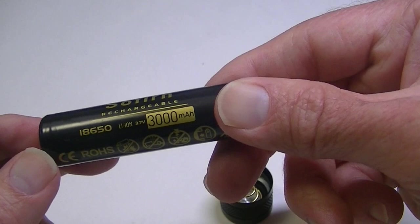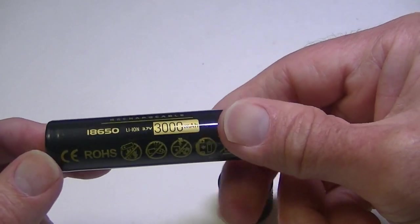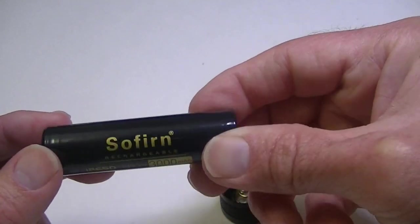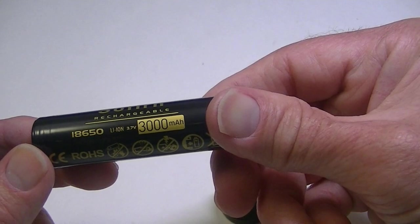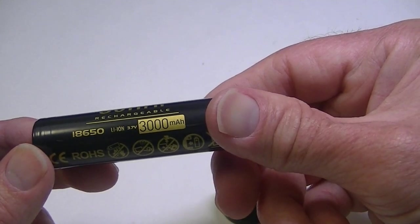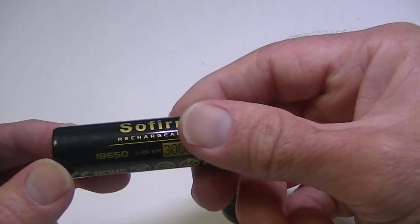The battery they give you is, of course, a Sofern - surprise surprise - a 3000 mAh 18650. So that's your battery and it does a nice job of powering the light. At 3000 mAh it's not too low in capacity and not the highest, so it's right in the middle.